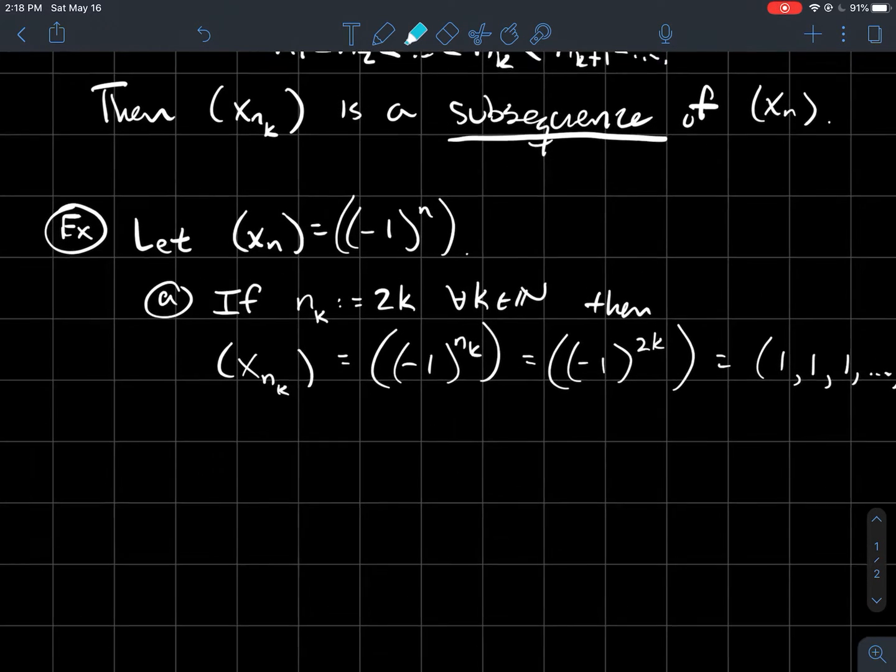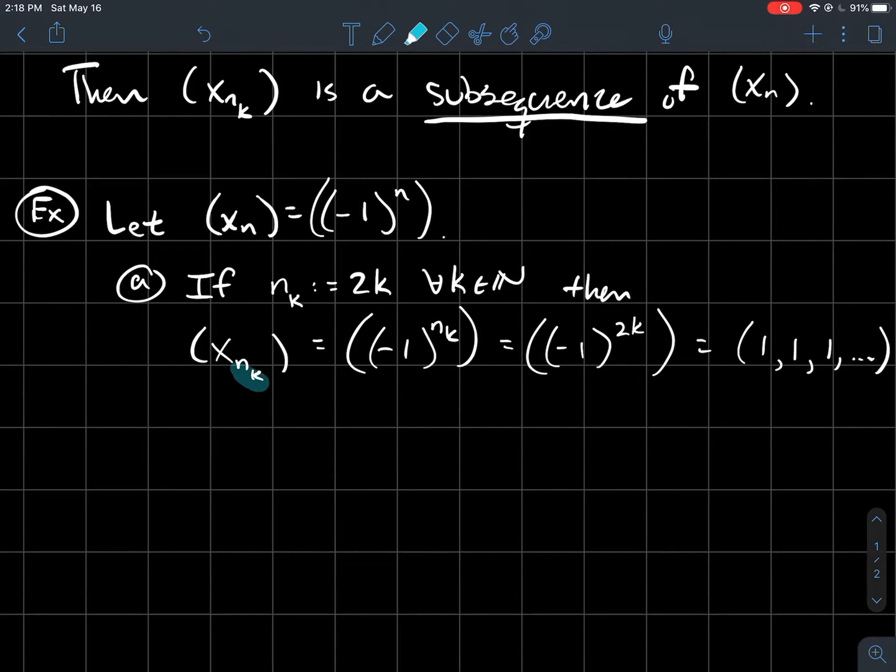But just so you see the math that's going on, right? xnk, well here's nk, it's 2k. So I should plug in 2k for that. But then minus one to an even power is just always one. So this is the constant sequence that's just one every time.